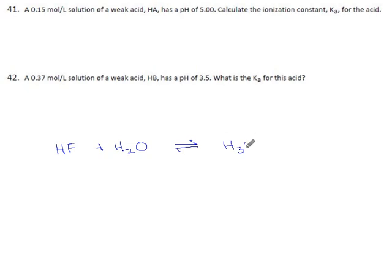We can write an equilibrium constant reaction for this. When you do, you do products over reactants. The products are H3O+ and fluoride, and the reactants you have HF.